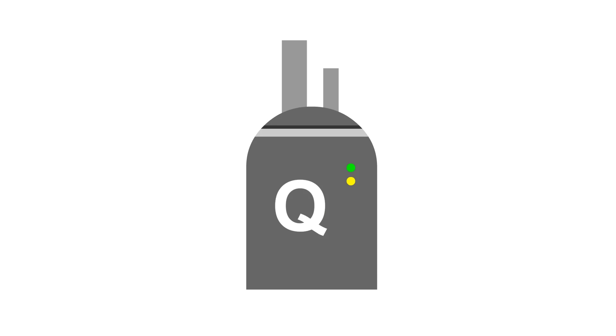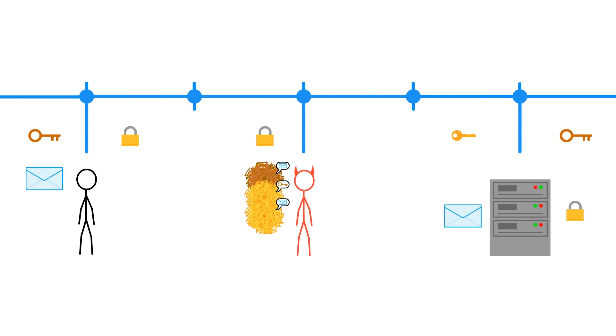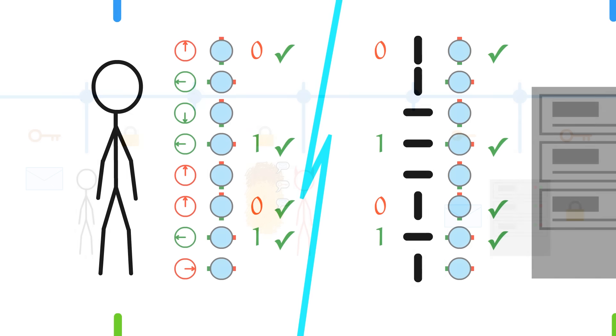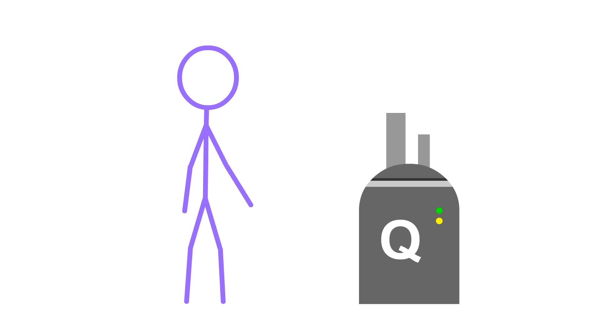In the end, quantum computers are a double-edged sword, at least in the world of security. They break our current system, but they open the door for more advanced ones. But isn't that pointless? Why develop quantum computers in the first place if they break and then re-solve the same problem? It's because they open up new possibilities — breaking security is just one of many things they can do.